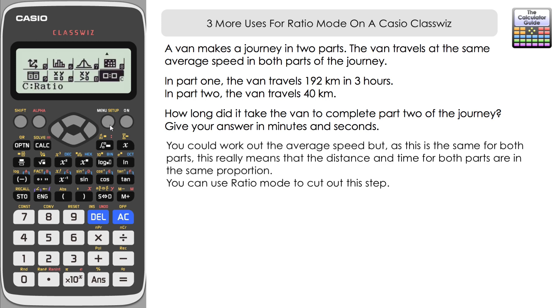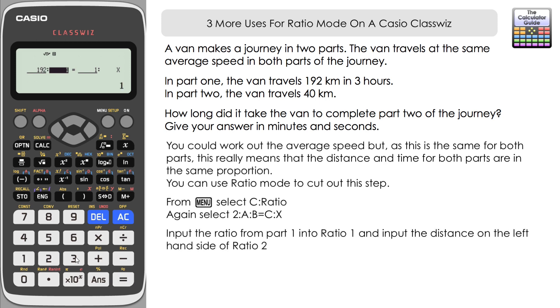So it's ratio mode again. If we're taking the left hand side as being distance, the right hand side as being time, we want option two. Time would be on the right hand side. So option two from the menu, we'll input the ratio that we know, which is from part one of the journey, 192 kilometres in three hours.